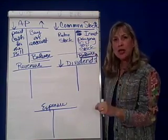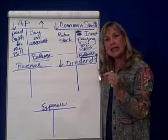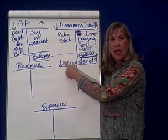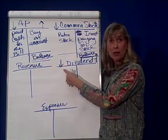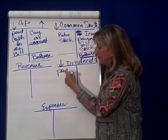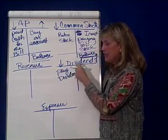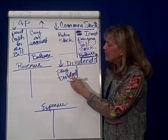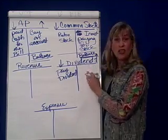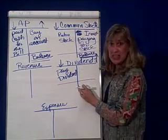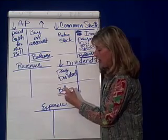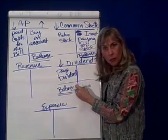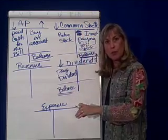Now dividends is our first what we call contra account. When we pay dividends to our stockholders, we debit dividends and we credit cash. If I debit dividends, notice I am reducing owner's equity or stockholders' equity. So when I pay dividends, what that debit to dividends shows is that I'm taking the ownership out of the business and giving it to the investors. So paying dividends shows up as a debit — we don't usually credit dividends. The normal balance that you would see in dividends is a debit balance. That's why it's called a contra account, because it's contrary to the norm.